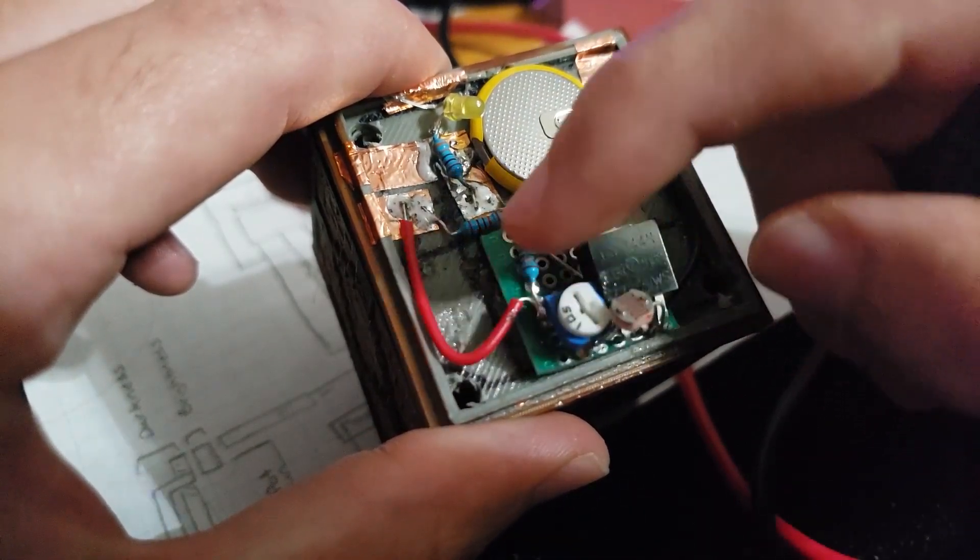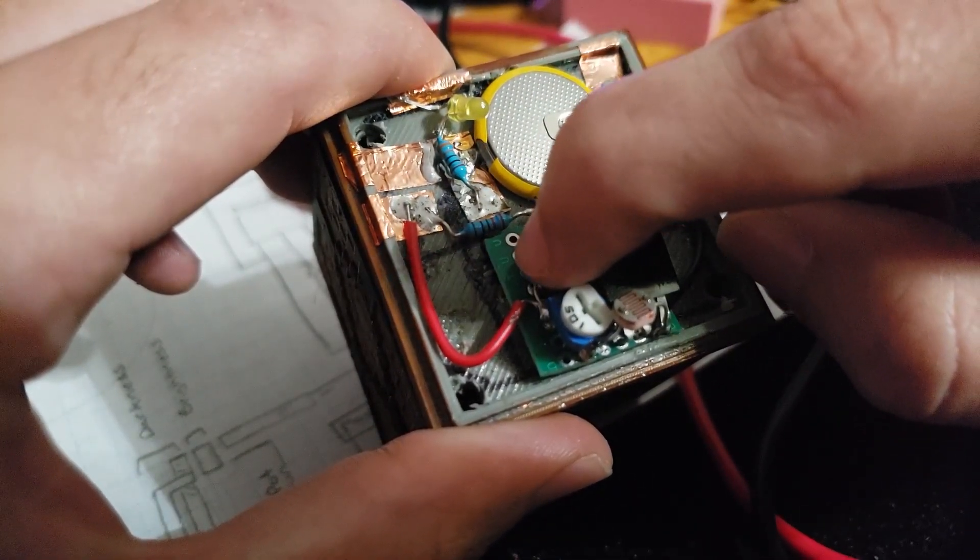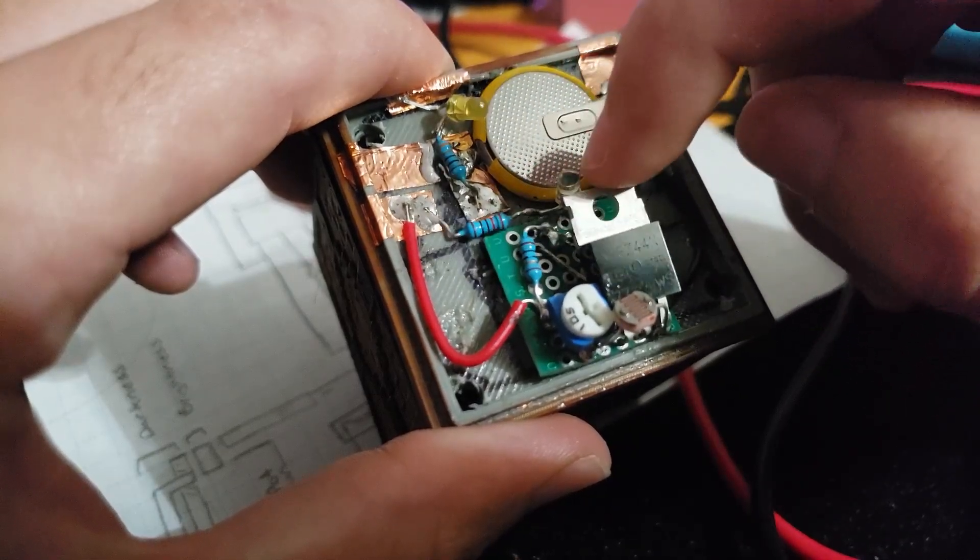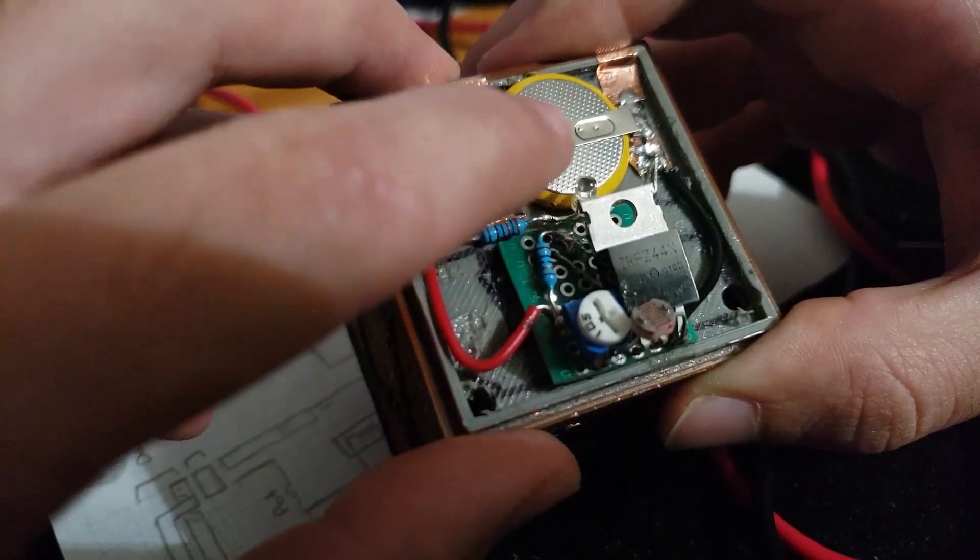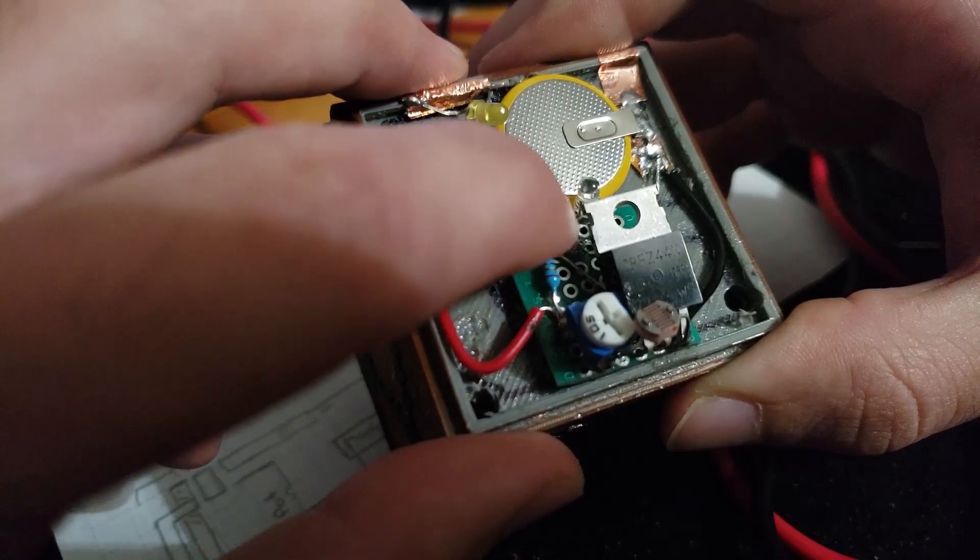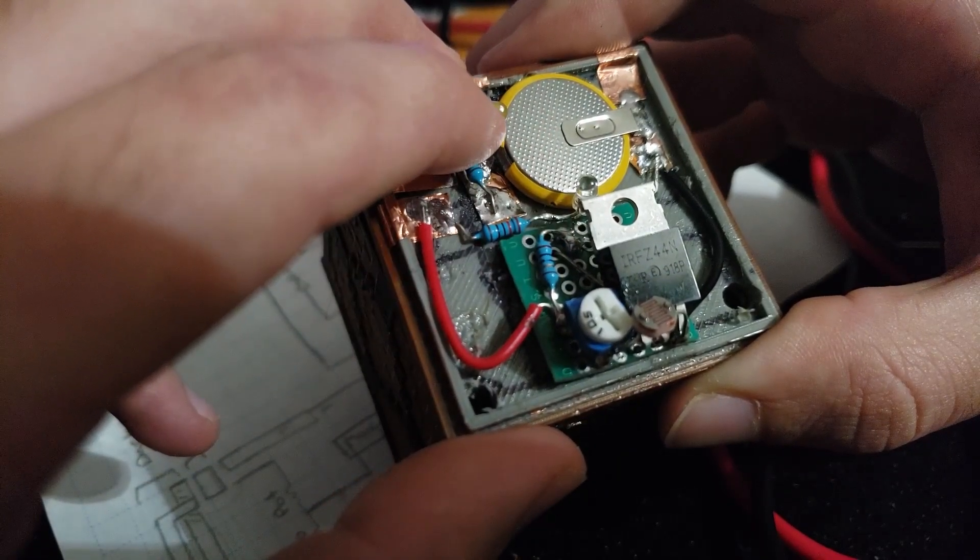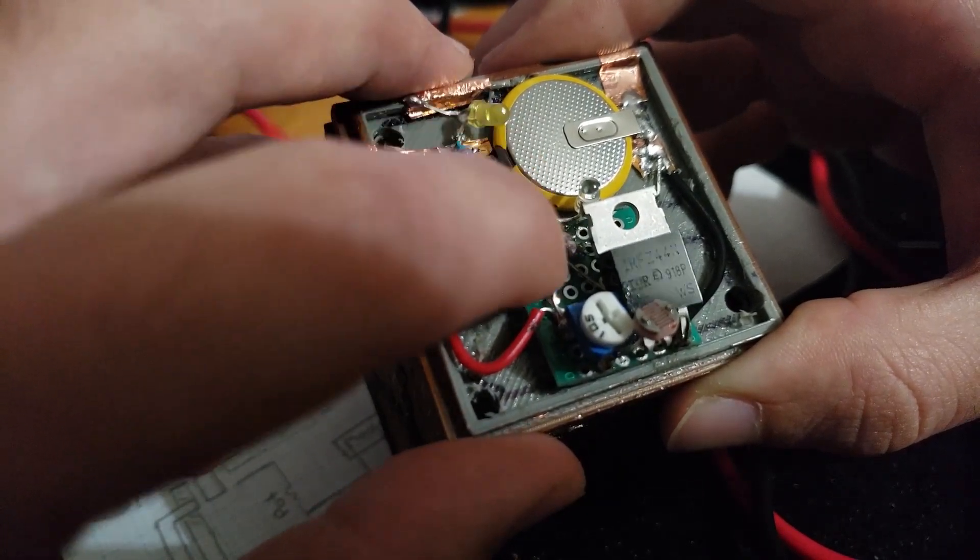then it allows current to flow through this current limiting resistor of 10 ohms through the LED. Since the battery is 3 volts and the yellow LEDs are only rated for around 2 volts,